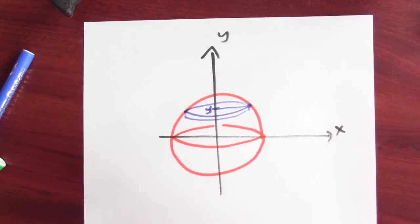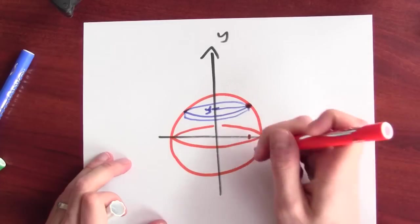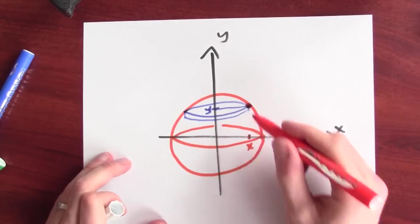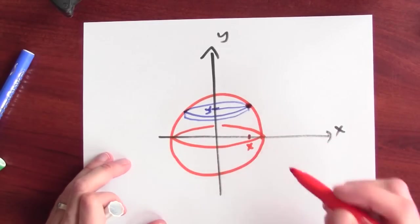Really what that amounts to is figuring out the coordinates of this point here. I want to figure out what that x coordinate is so that xy lands on that circle.